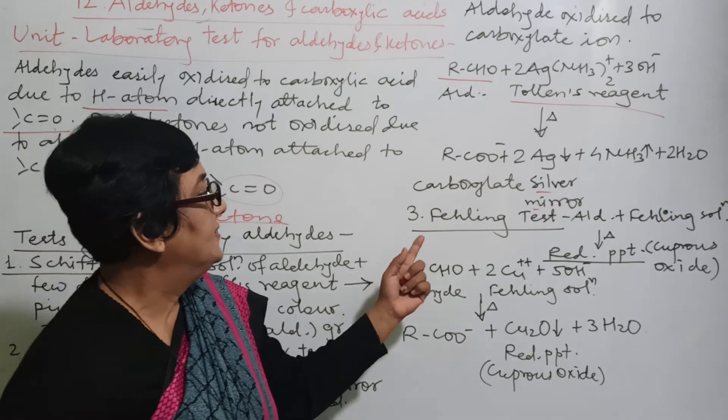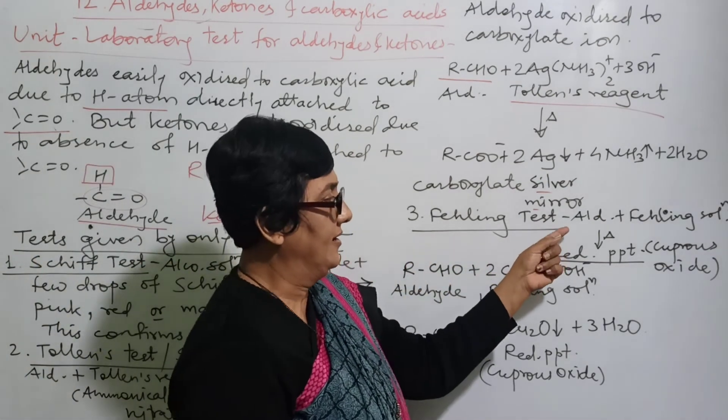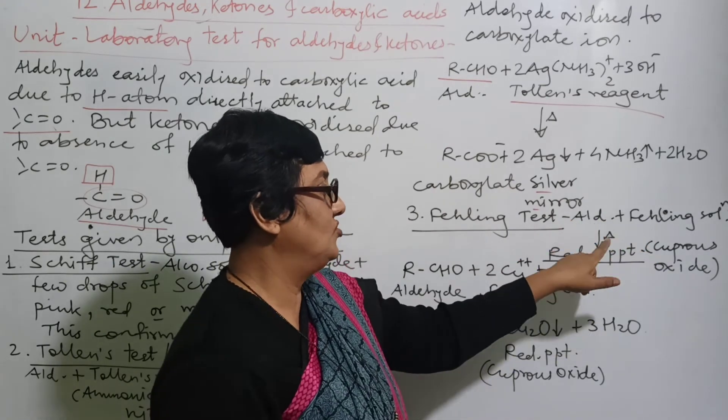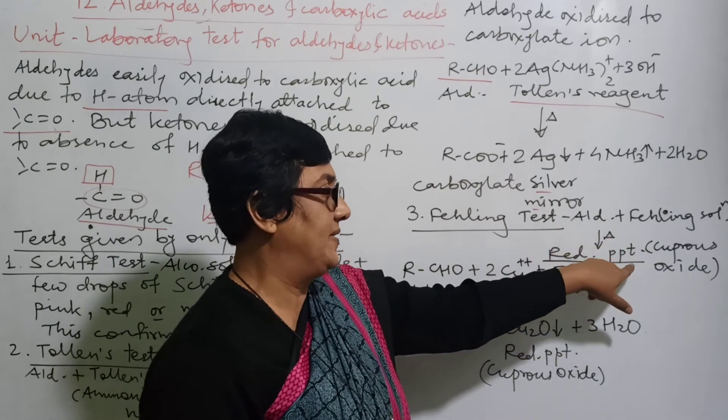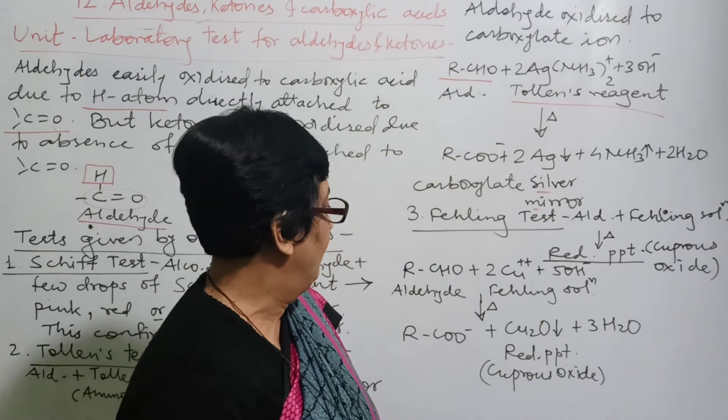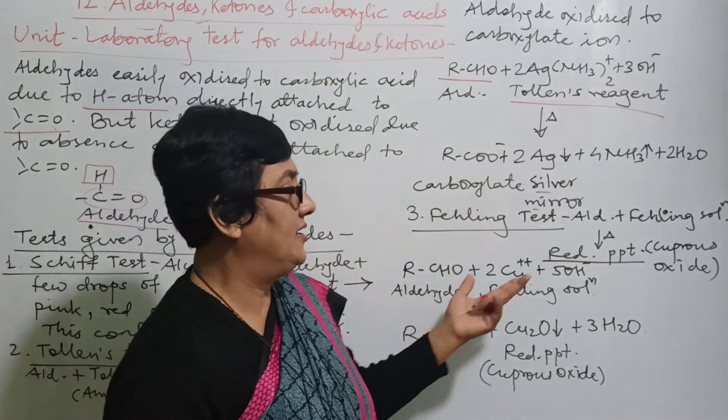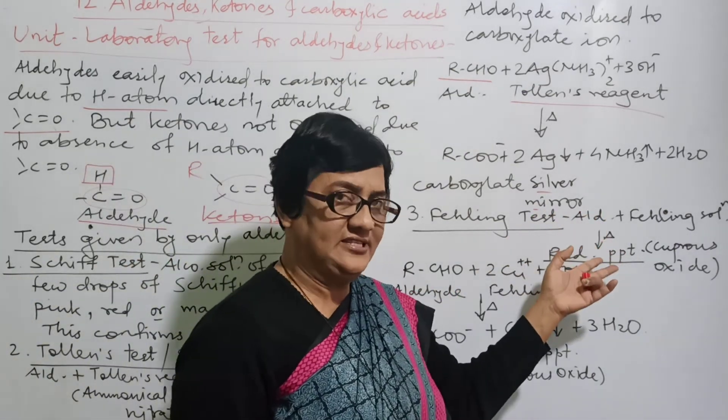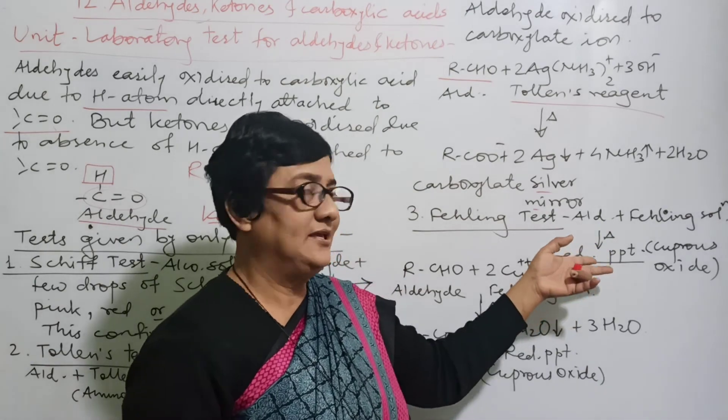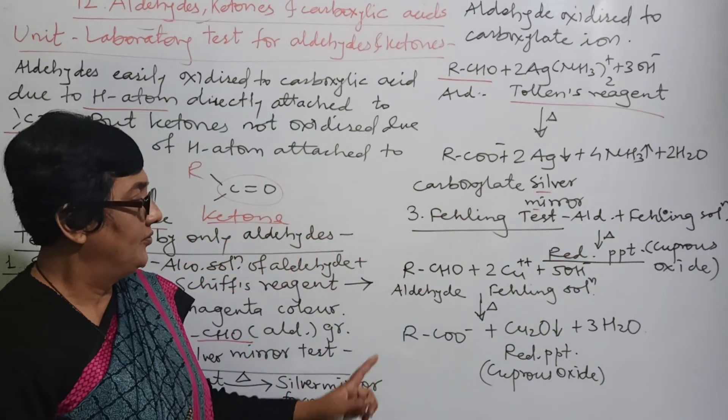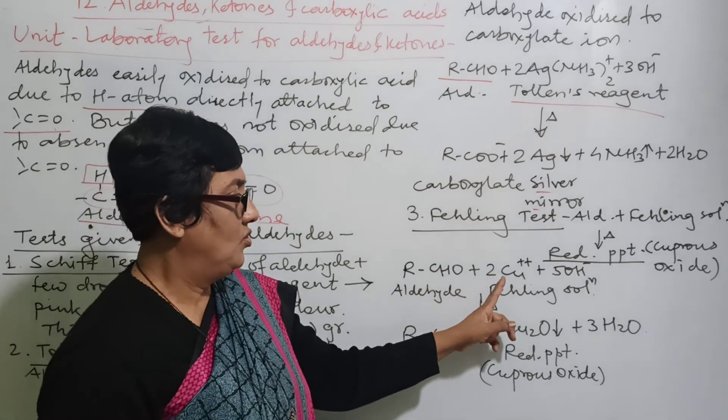Then Fehling solution test: aldehyde plus Fehling solution, boil it, gives red precipitate of cuprous oxide. So what I'm telling you, you can write in sentence form or you can write like this, which is easier for us to remember. So we've written it like this.